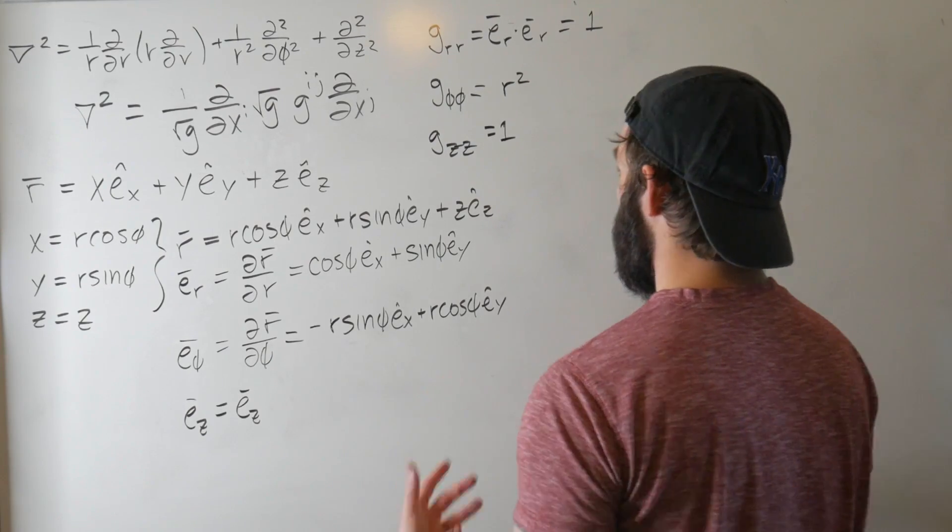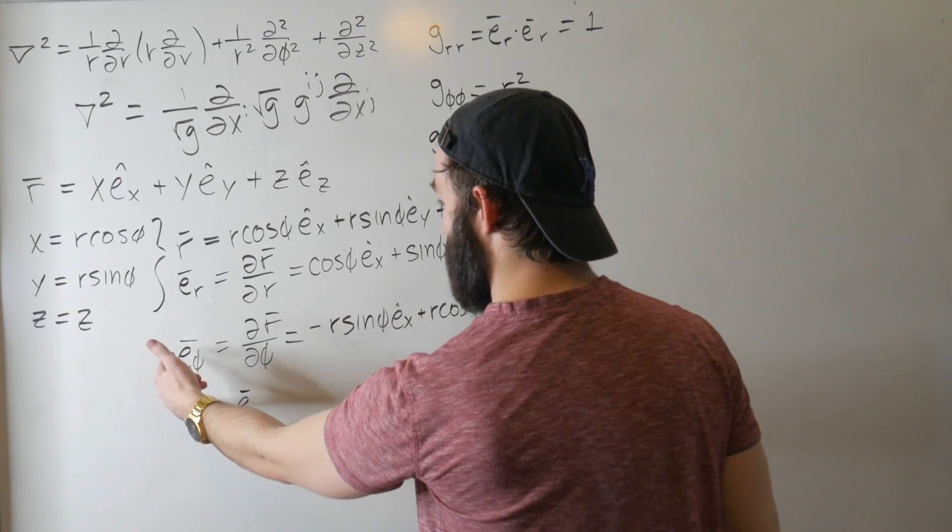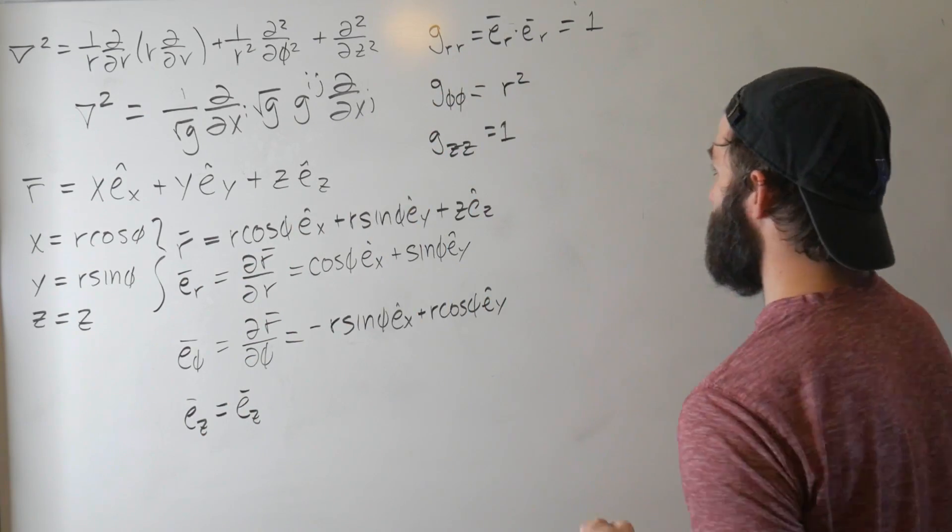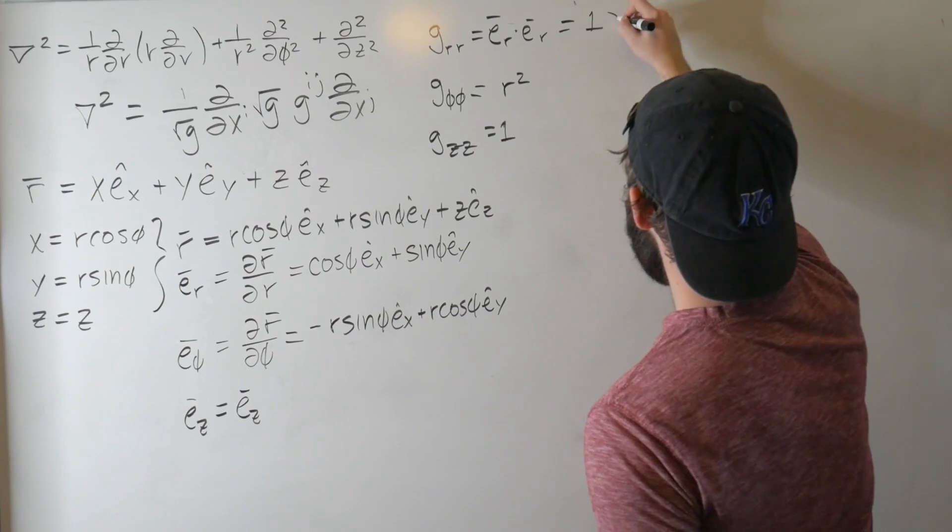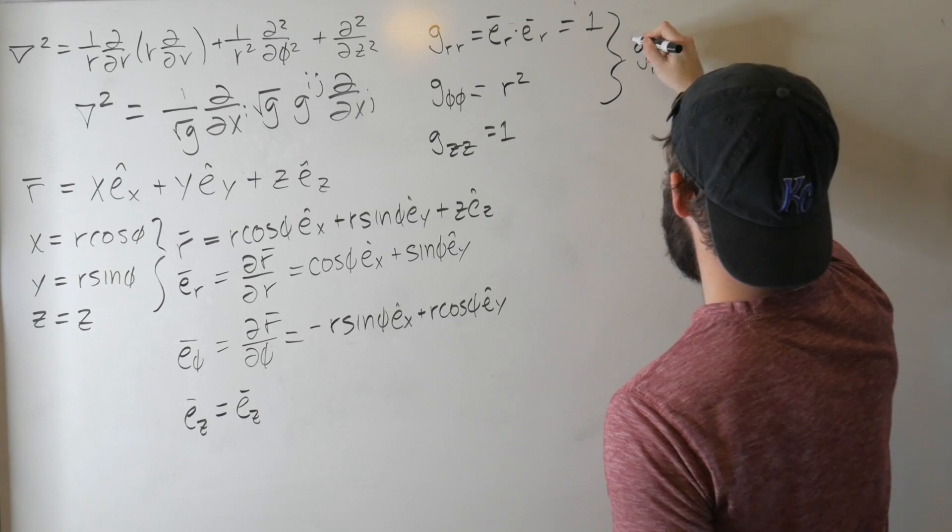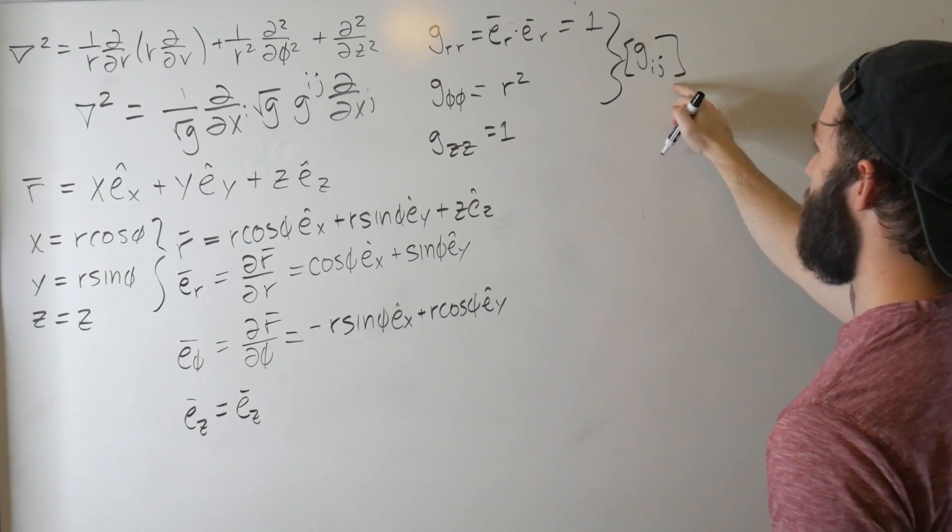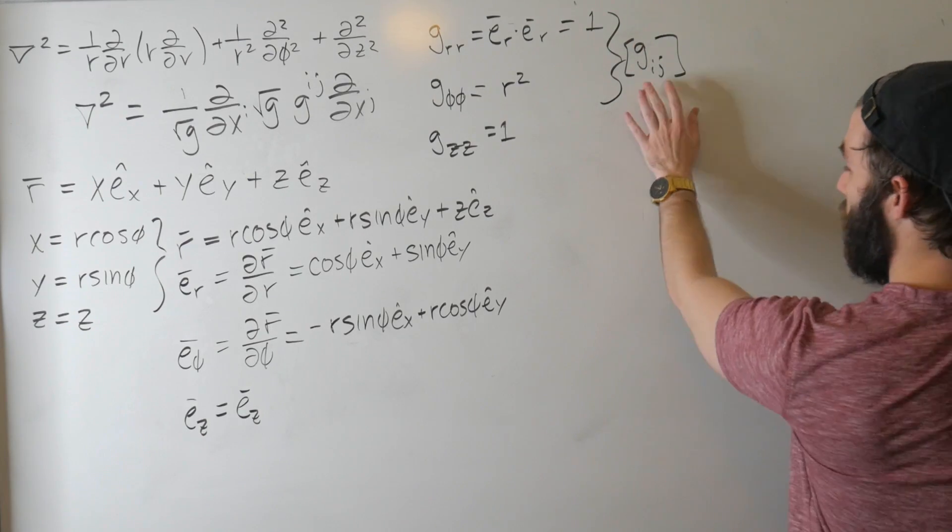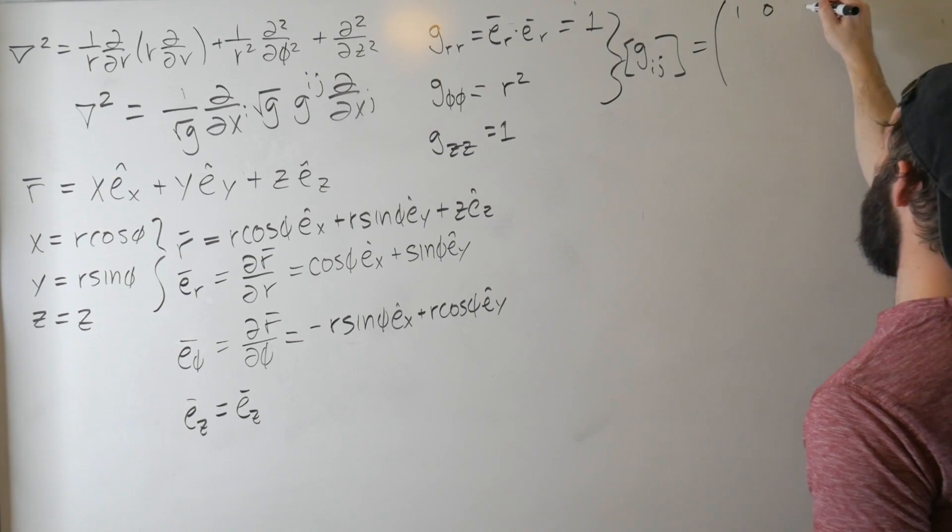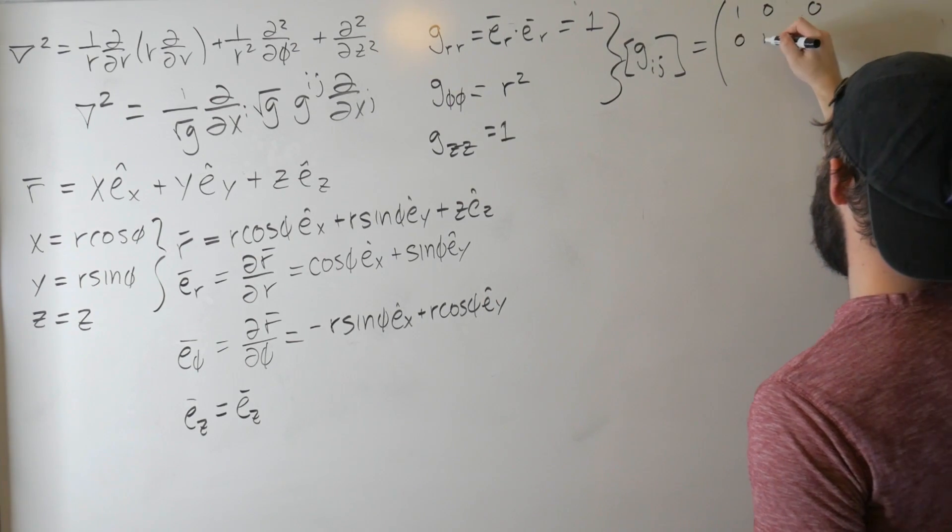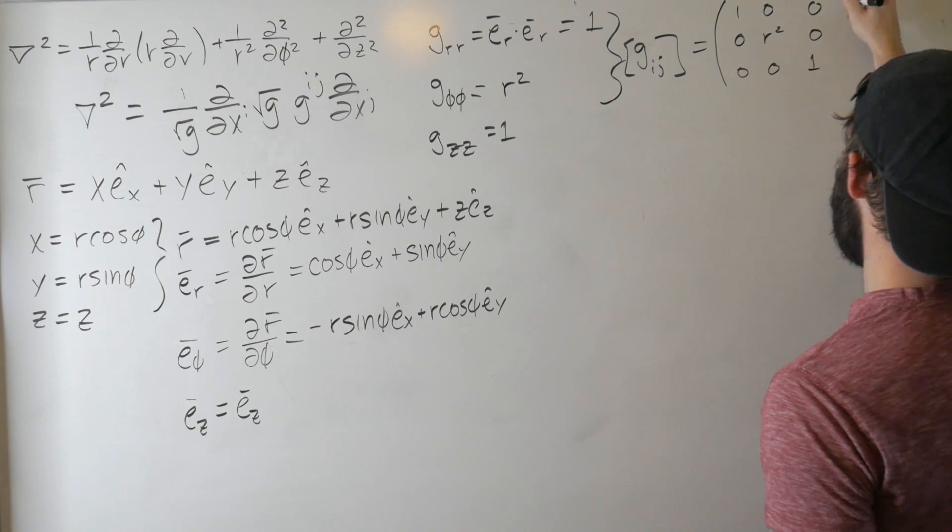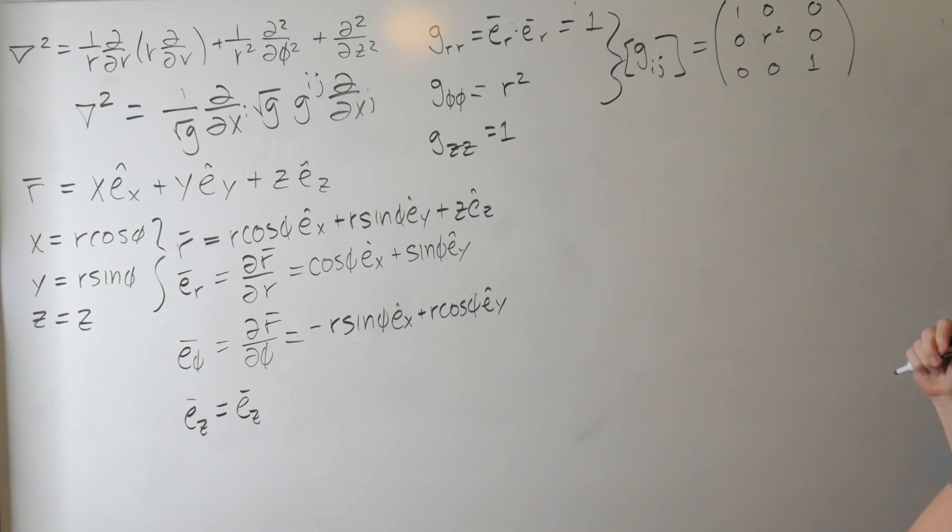And since we're working in an orthogonal coordinate system, all of the off-diagonal, so things like g_r phi or g_phi z are going to be zero. So we can collect all of this into a matrix, and I will write as g_ij, and I'm going to put this little bracket around it to say that we're looking at the matrix, otherwise we're just looking at matrix elements. This is equal to [1, 0, 0; 0, r², 0; 0, 0, 1]. We're making progress.